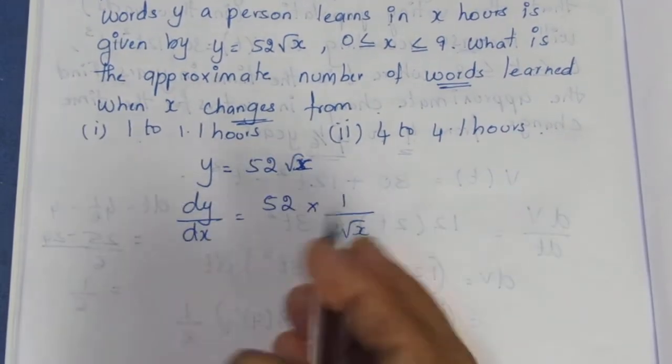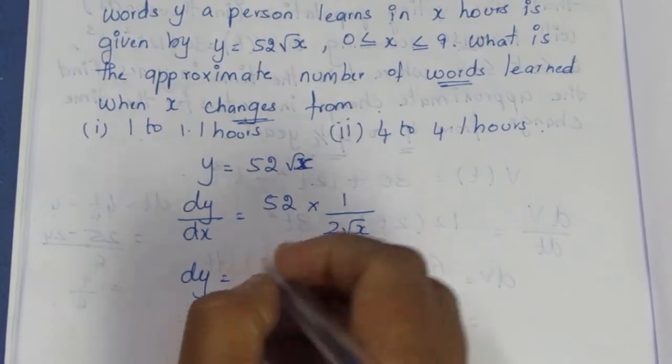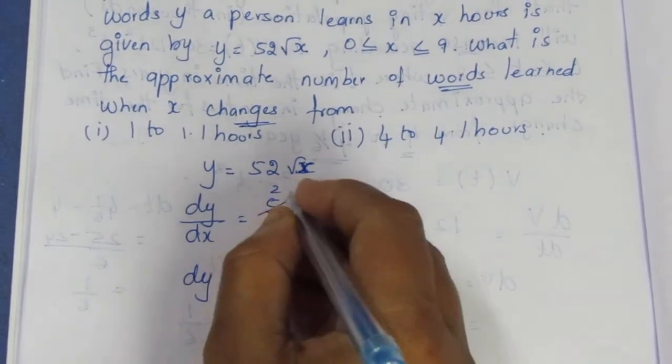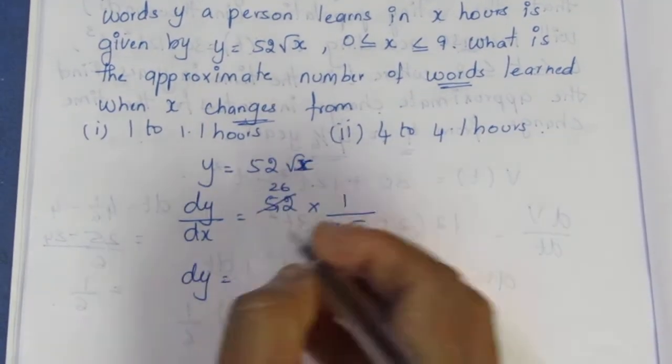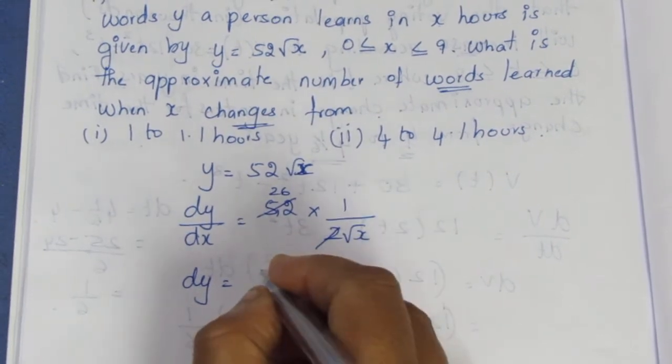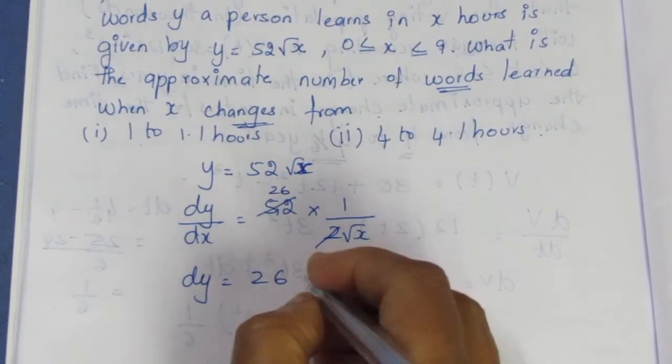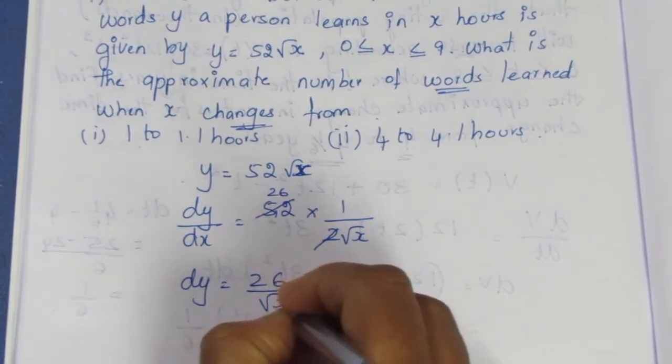Now we write dy equals, cancel the 2, 52 by 2 is 26. So dy = (26/√x)dx.